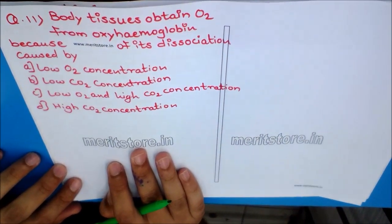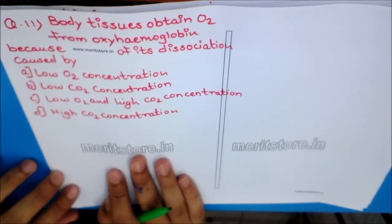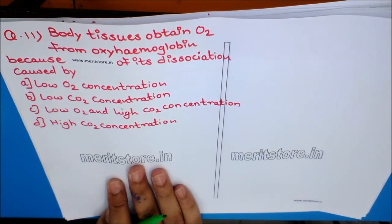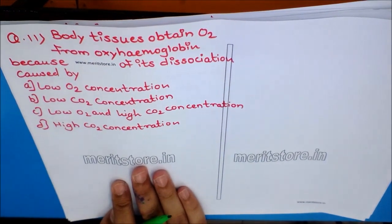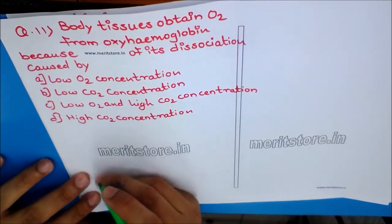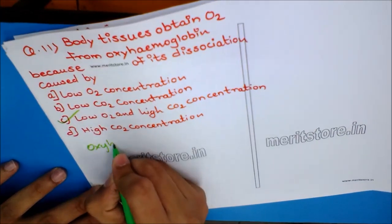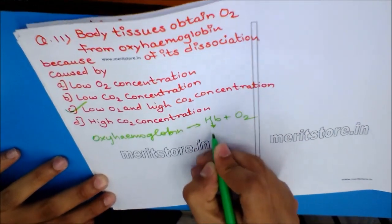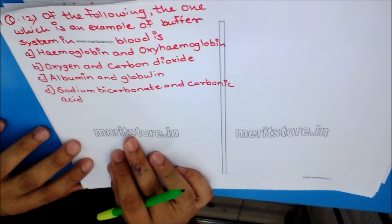Question 11: Body tissues obtain oxygen from oxyhemoglobin because of its dissociation caused by? Options: A) Low O2 concentration, B) Low CO2 concentration, C) Low O2 and high CO2 concentration, D) High CO2 concentration. The dissociation is caused by both low O2 and high CO2 concentration together. Low O2 alone, or low/high CO2 alone, cannot contribute to the dissociation of O2 from oxyhemoglobin. The answer is option C.